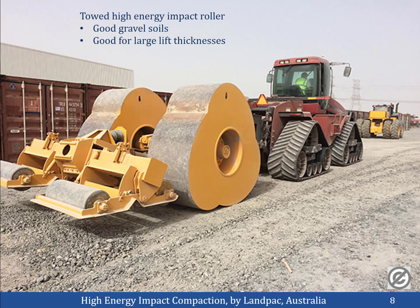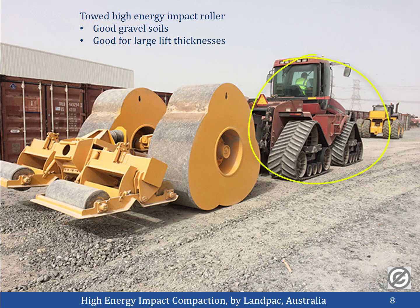This is our first example of a towed compactor. The yellow piece of equipment is the actual compactor, being towed by a rubber-belted tractor. This is called a high-energy impact roller. Because the rollers are not round, they rise and fall on the fill material, using pressure, vibration, and impact to compact the soil. It is very good at compacting coarse gravel materials and can compact thicker lift layers than other equipment due to its high energy levels. The high-energy impact roller is not used much in North America, though it is common in both Europe and Asia.